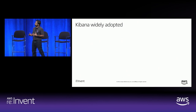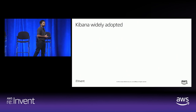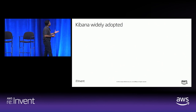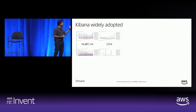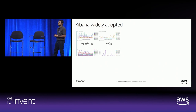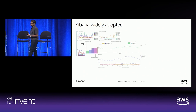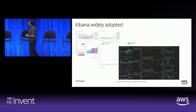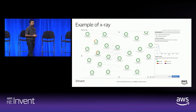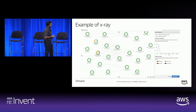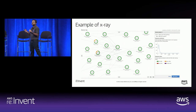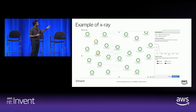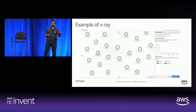One example use case of Instrumentation Service is Elasticsearch Service with Kibana. At Autodesk, Kibana and Elasticsearch are used widely — we have all sorts of dashboards for various services. This is an example of X-ray traces for one of our services. Each circle represents a given operation or API call. Green means the call was doing okay, yellow represents a warning, and red represents an error.